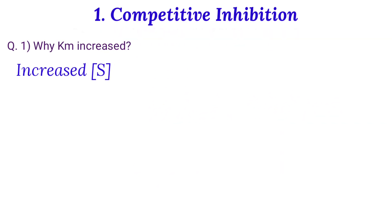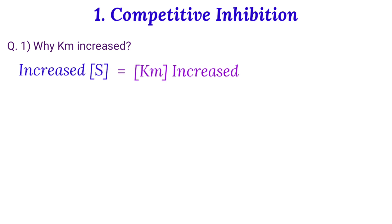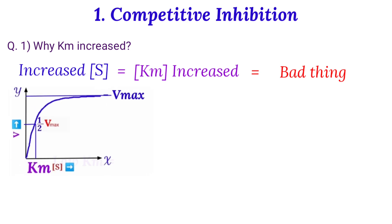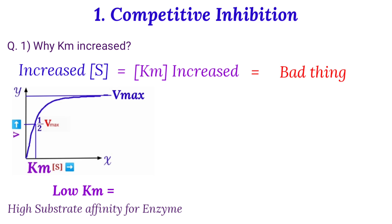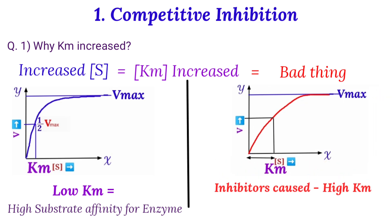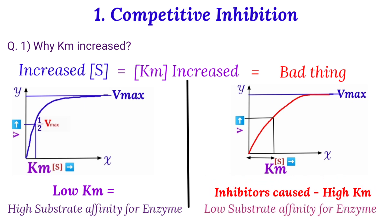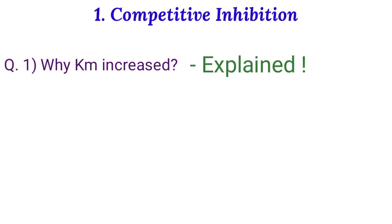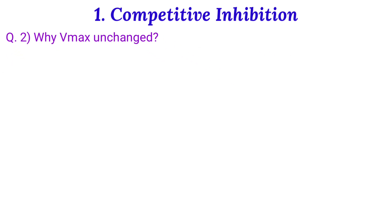We can represent this in the Michaelis-Menten plot where the normal hyperbolic curve in the absence of inhibitor shows Vmax and the Km value — the substrate concentration at which half the maximum velocity is achieved. When we plot in the presence of inhibitor, the curve shifts, representing a change in Km value. Notably, Vmax remains the same in both cases, but Km has been changed. Km has increased because more substrate concentration is needed, which is not good for the enzyme.